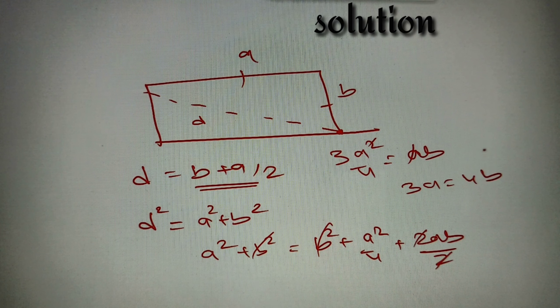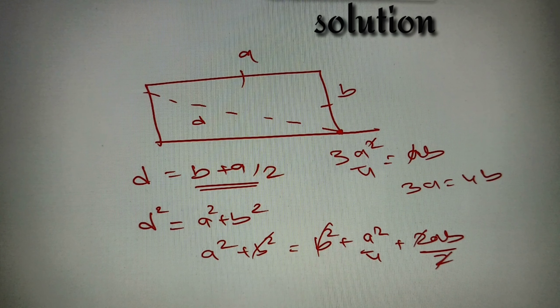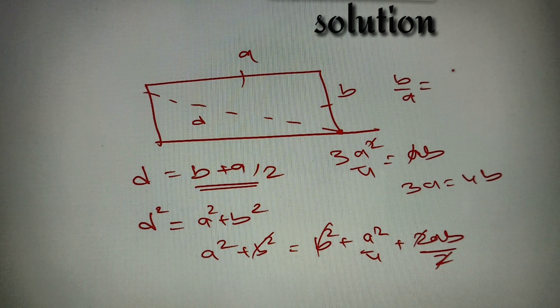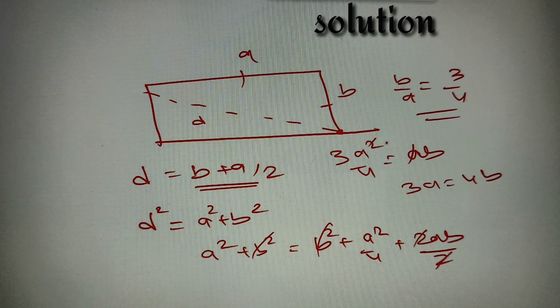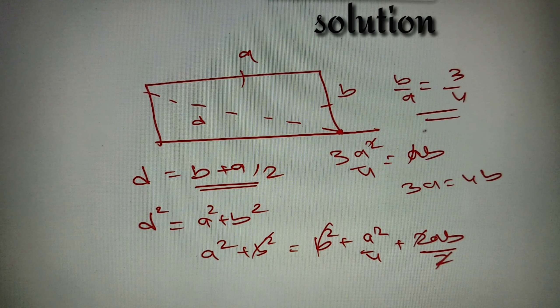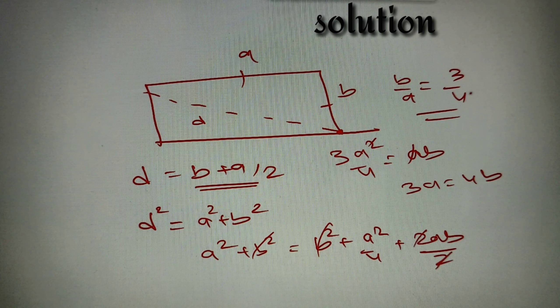We have to find the ratio of the shorter side to the longer side, so that is equal to B by A, which is equal to 3 by 4. According to our given question, it is option number D. So our answer is option number D, 3 is to 4.